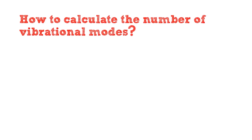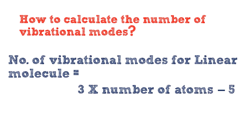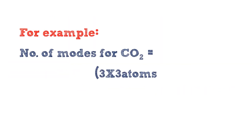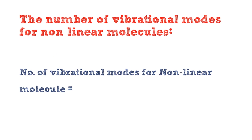How can we calculate the number of vibrational modes of a compound? The number of vibrational modes depends on the number of atoms in the molecule. A linear molecule with n atoms has 3n−5 degrees of vibrational modes. For example, carbon dioxide CO₂ has 3 × 3 − 5 = 4 vibrational modes. A non-linear molecule with n atoms has 3n−6 degrees of vibrational modes.